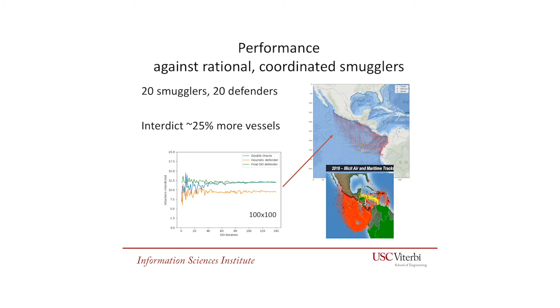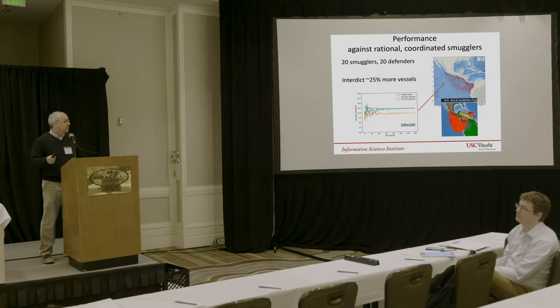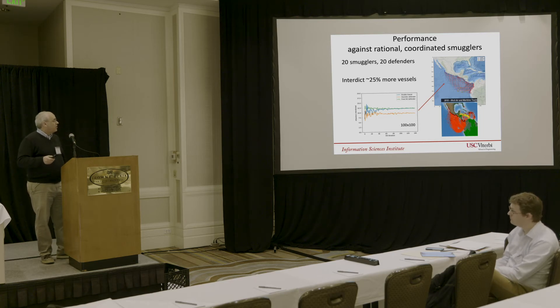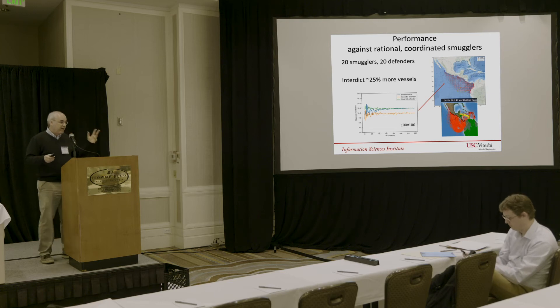When we can't find a new strategy for both players, we've reached convergence, and the solution is a solution to the original game. We've been scaling this up and applying it to the Eastern Pacific area, now finding coordinated plans with about 20 smuggling vessels and about 20 defenders. When we find convergence on this double oracle method, we're able to interdict about 25% to 30% more vessels than with the best heuristic method not using this game-theoretic approach. Interestingly, the best mixed attacker strategy is starting to look quite similar to what we're actually seeing in 2018 data.